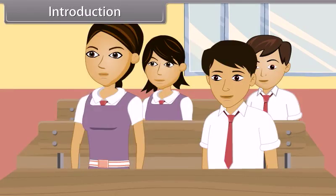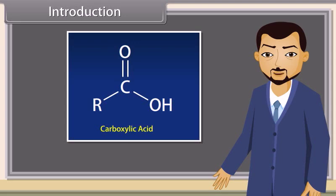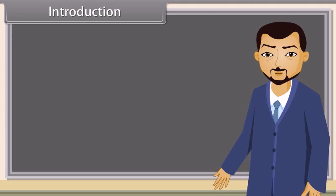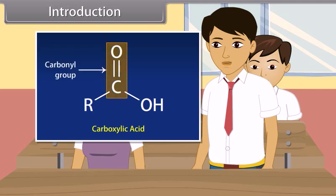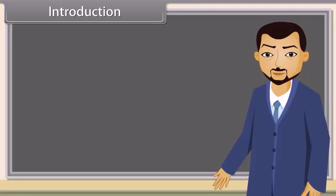Teacher, what are carboxylic acids? Carboxylic acids are the organic compounds which contain a carboxyl group. Who will tell me what is a carboxyl group? Carboxyl group consists of a carbonyl group and a hydroxyl group. Very good, Ramesh. In this lesson, we will learn more about carboxylic acids.